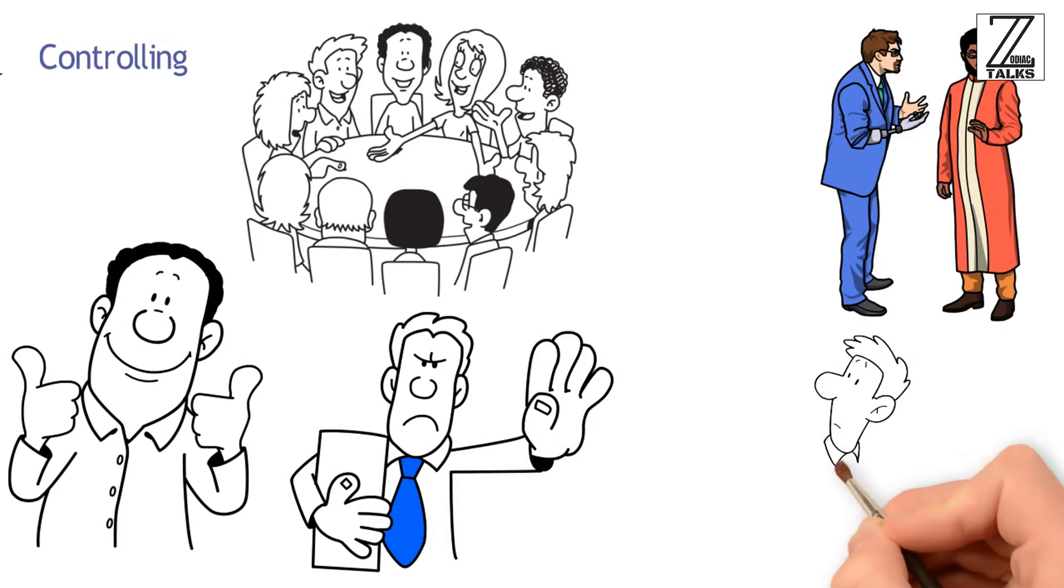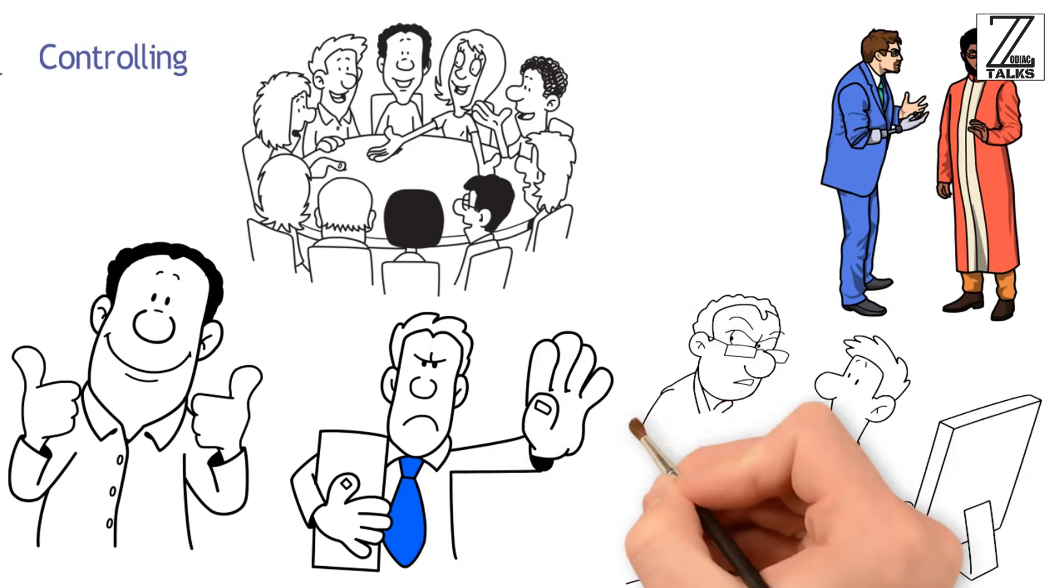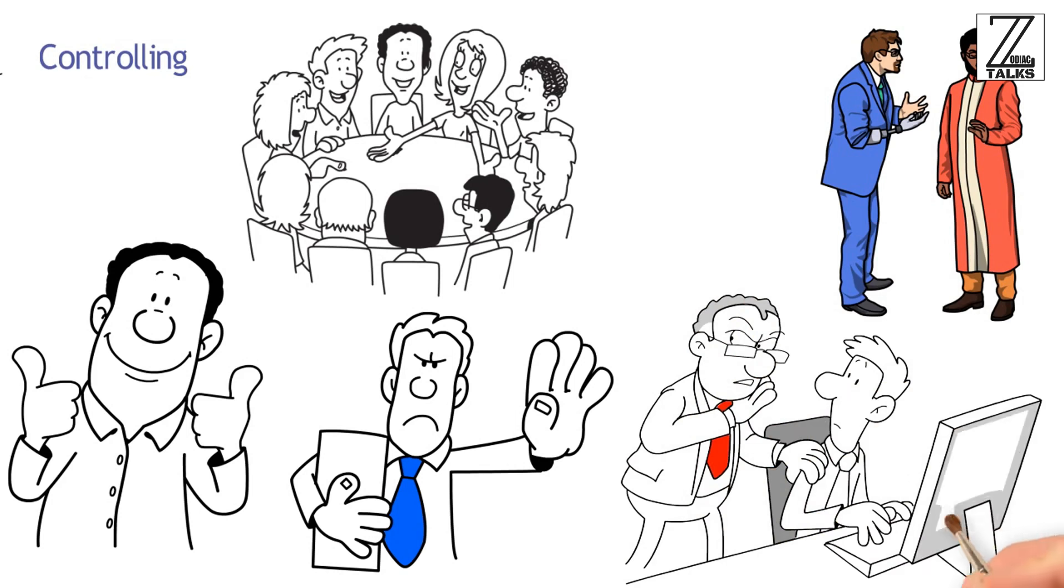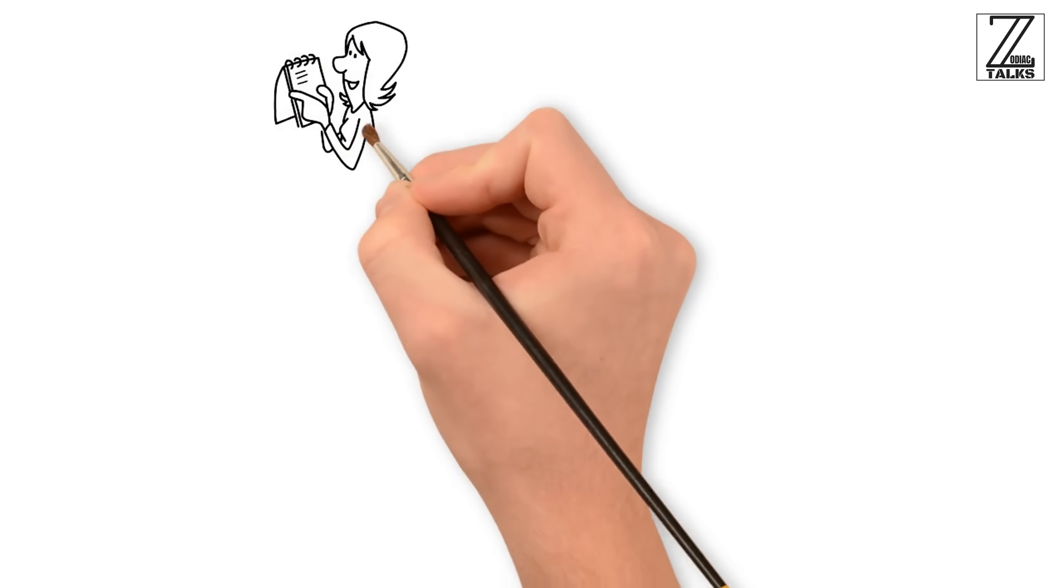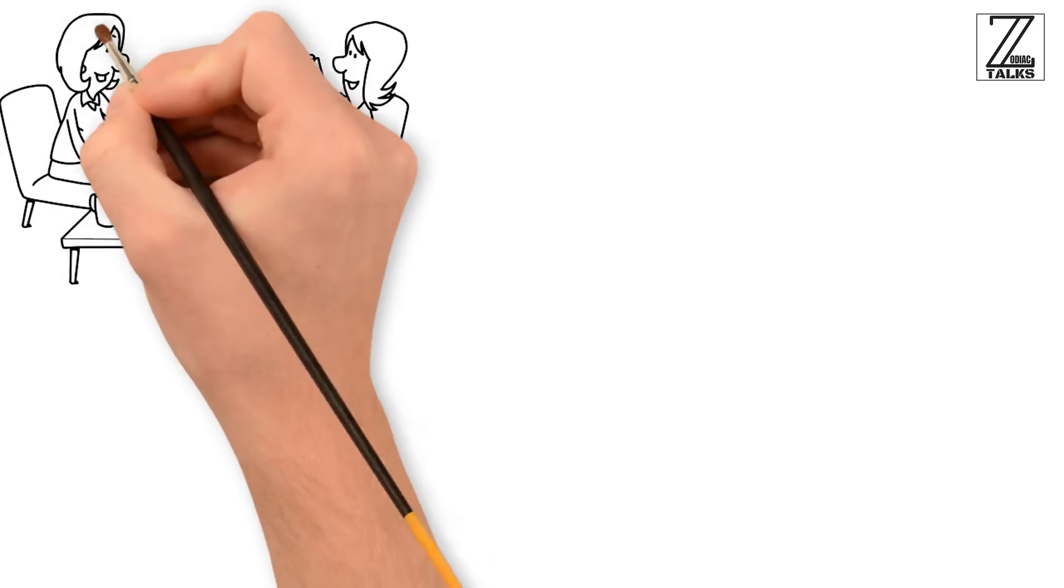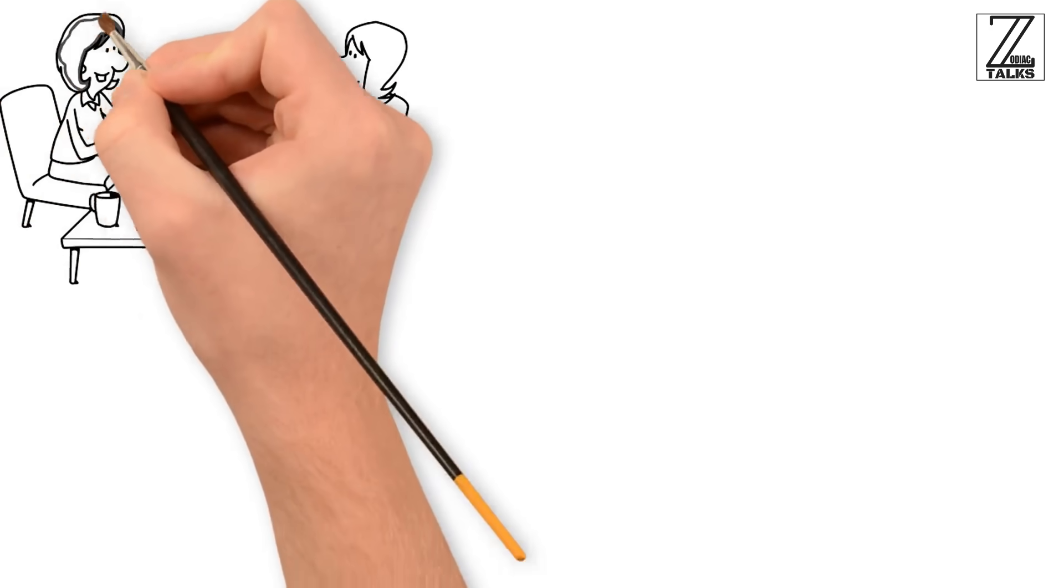At the workplace, this zodiac will tend to be the micromanaging type. Relationships with Capricorns are even harder than working with them. Not only will they carry on with an argument until they are satisfied that they have had the last word, they will want to dictate all aspects of the relationship.